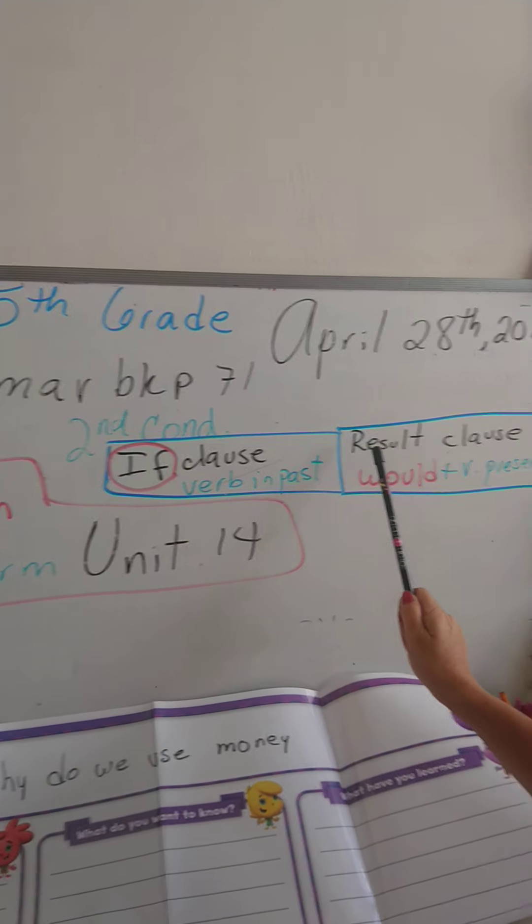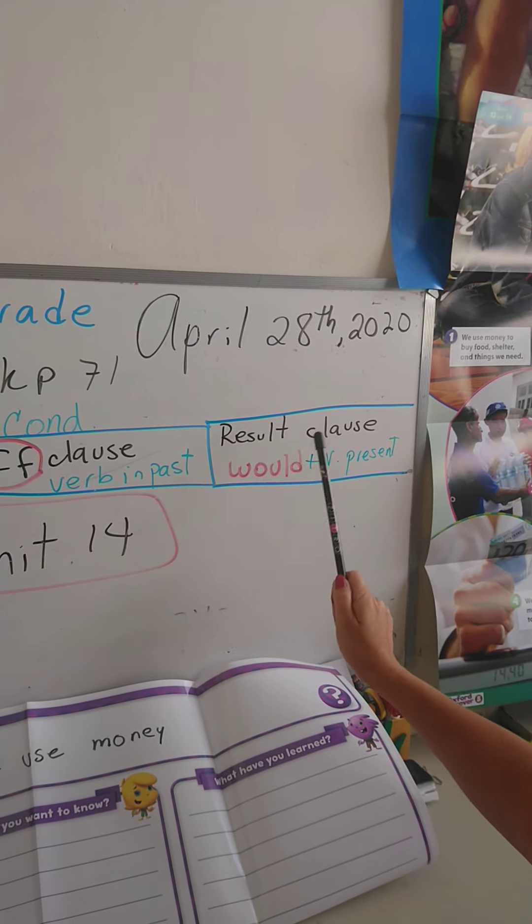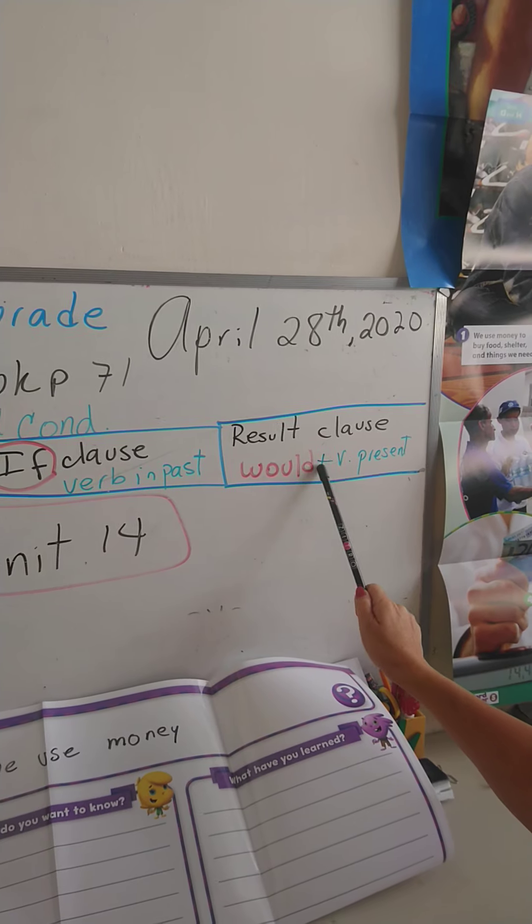In grammar, we are using the second conditional. The second conditional is used for unreal things. For example: if I won the lottery — because it's past tense — I would buy a helicopter. If I were taller, I would play basketball, but I'm not so tall, so I decided not to play it.